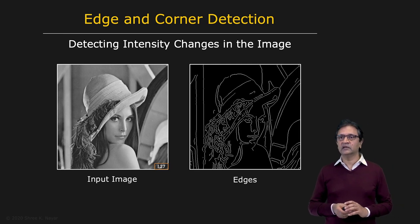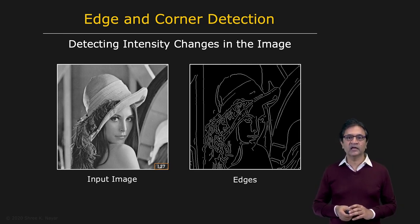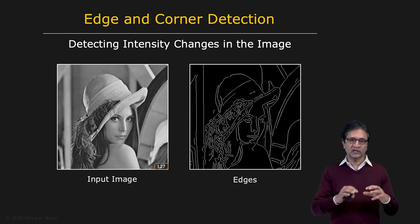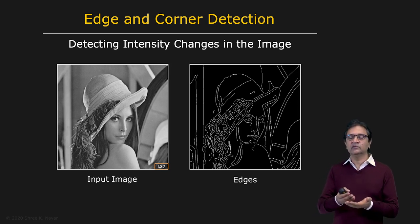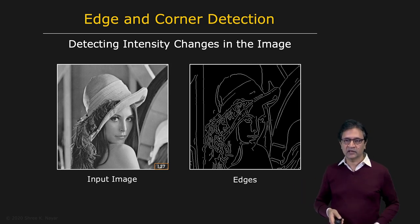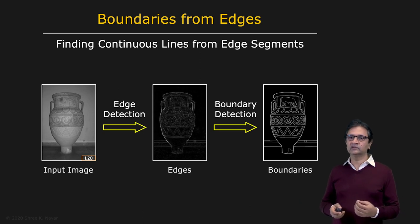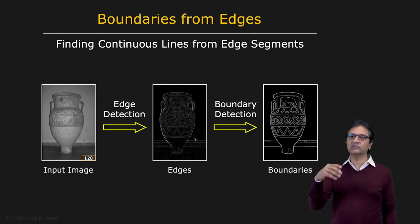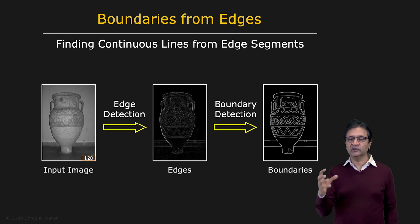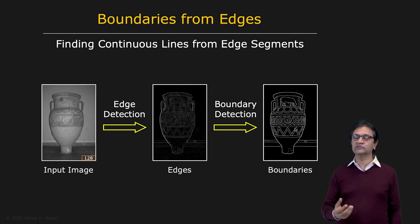Then we're going to look at feature detection. The first features we're going to look at are edge detectors and corner detectors. We'll develop a framework and theory for edge detection, and based on this theory, develop a few different types of edge and corner detectors. When you apply an edge detector to an image, you get what we call an edge map — the strength of the edge at each point. We need to go from these edges to boundaries, and we'll develop algorithms for boundary detection.